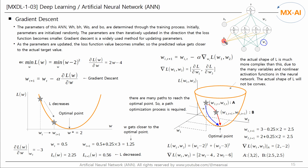The parameters of this ANN — WH, BH, WO, and BO — are determined through the training process. During training, parameters are adjusted to minimize the loss function, which is calculated using the actual target value and the predicted value. Mean squared error, binary cross-entropy, or cross-entropy can be used as a loss function. Initially, parameters are initialized randomly, then iteratively updated in the direction that makes the loss function smaller. Gradient descent is a widely used method for updating parameters, and as parameters are updated, the predicted values get closer to the actual target values.